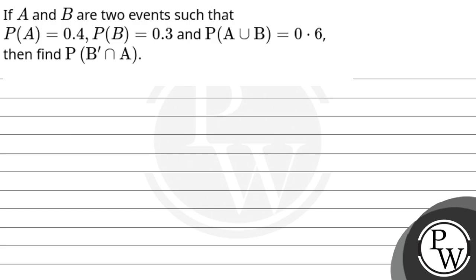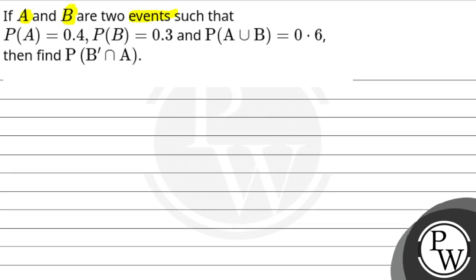Hello Vachnu, let's start the question. So here the question says, if A and B are two events such that probability of A is 0.4, probability of B is 0.3, and probability of A union B is 0.6, then find probability of B prime intersection A.